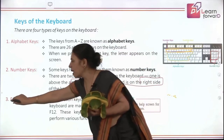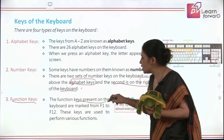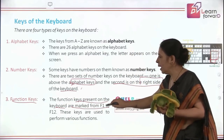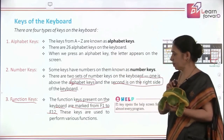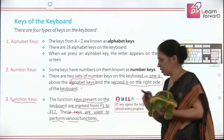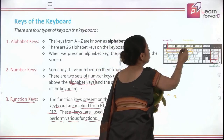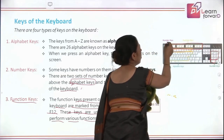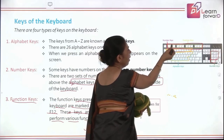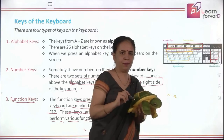The third type of keys are function keys. These function keys are present on the keyboard and they are marked from F1 to F12. These keys are used to perform various functions. I will show you — they are at the top of your keyboard, starting from F1, F2, F3, F4 and going up to F12.